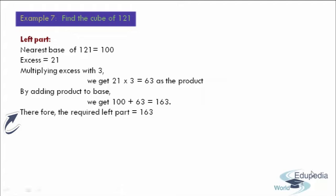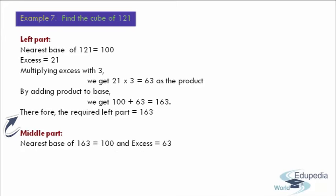After completing the process of the left part and moving to the process of the middle part, the first step is taking the left part answer as the new number, we have to find the nearest base and also the excess. So therefore the nearest base of 163 is 100, and the excess when compared with the base is 63.